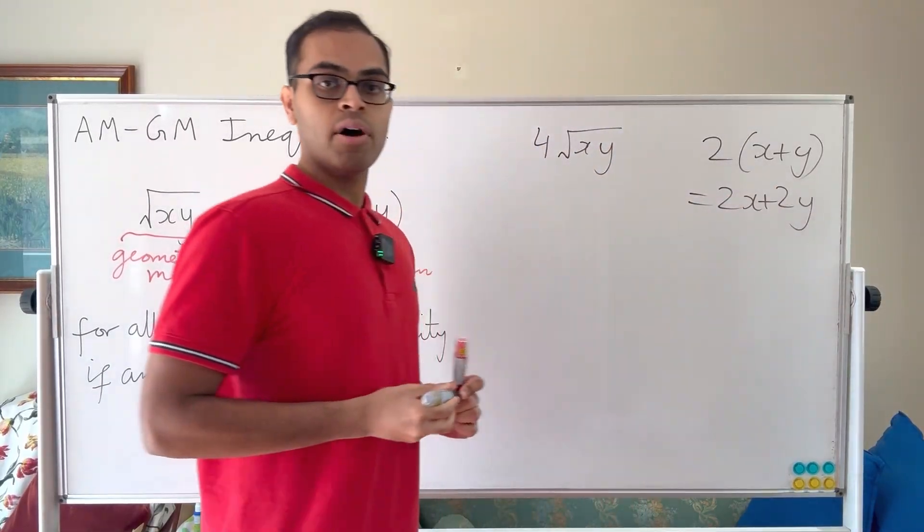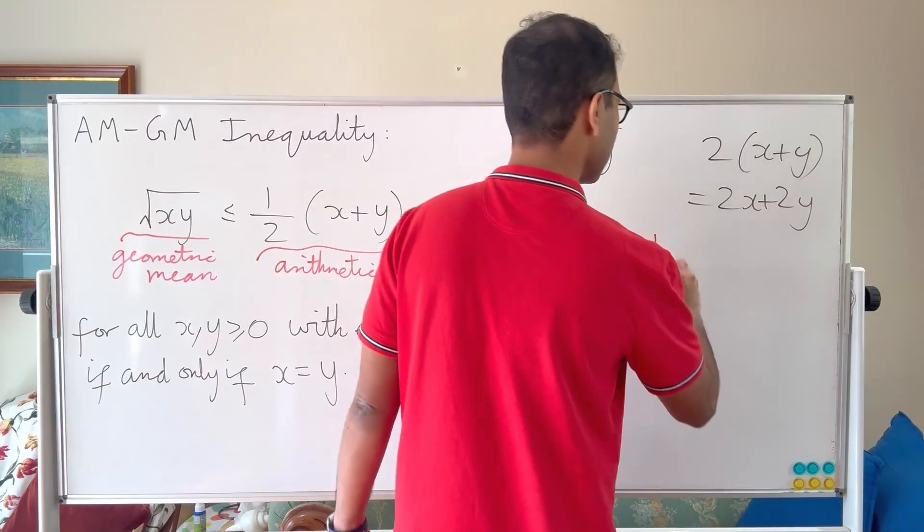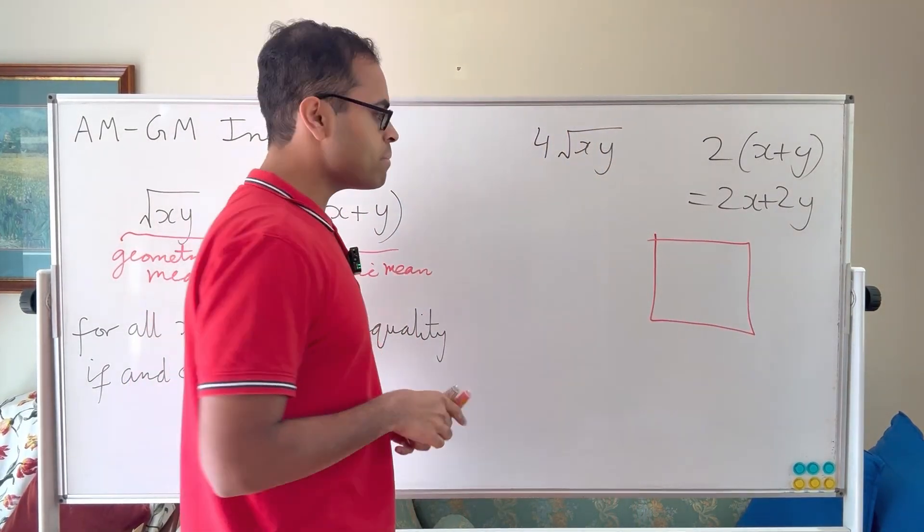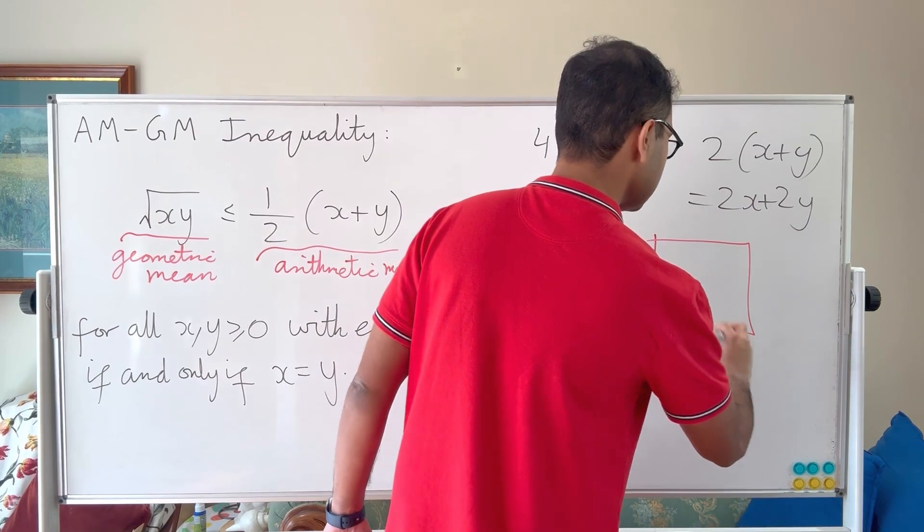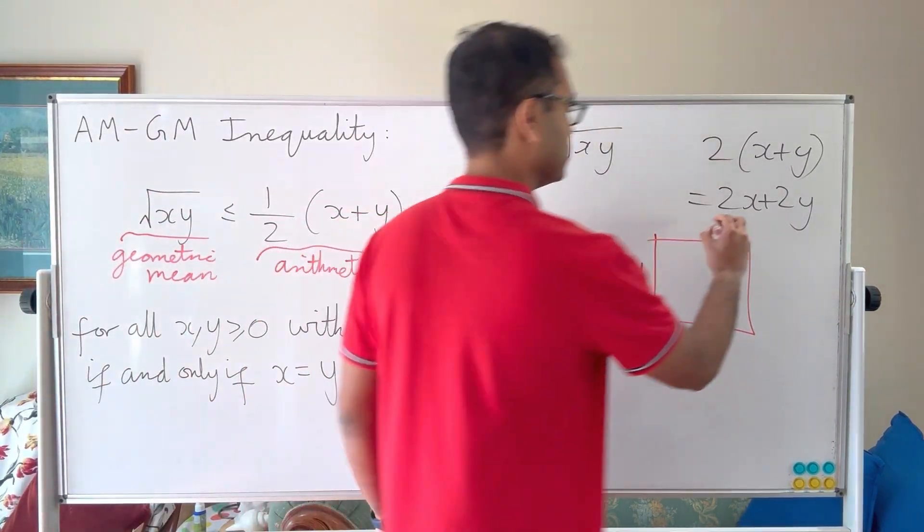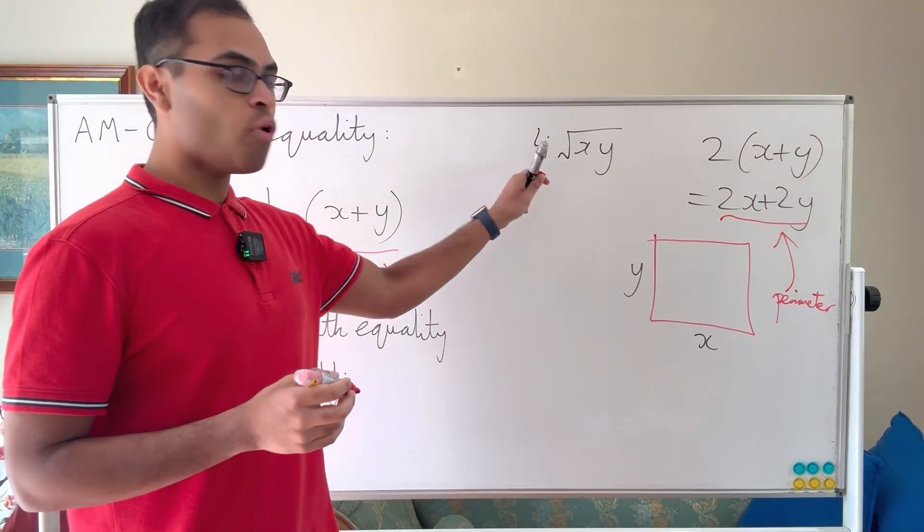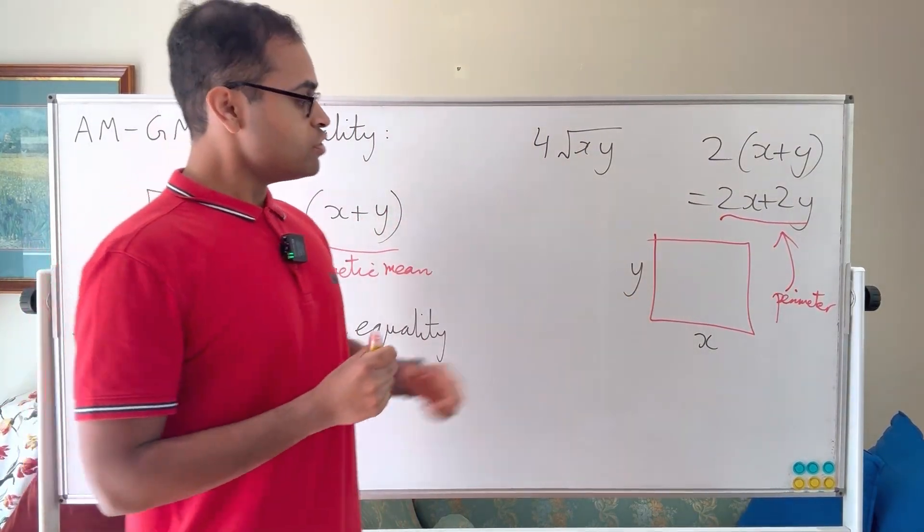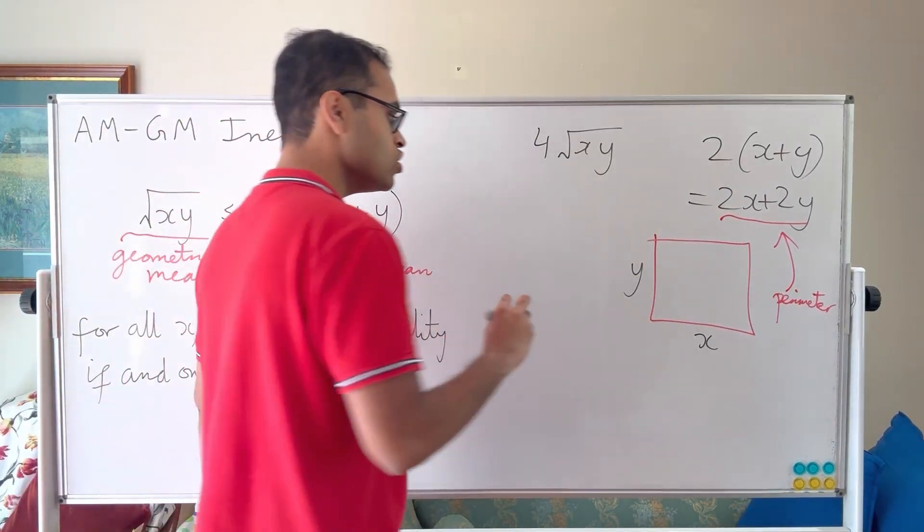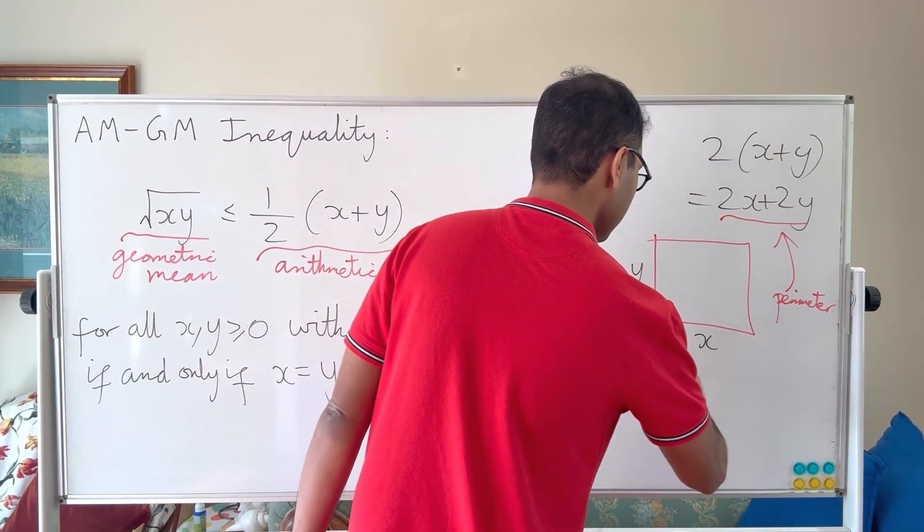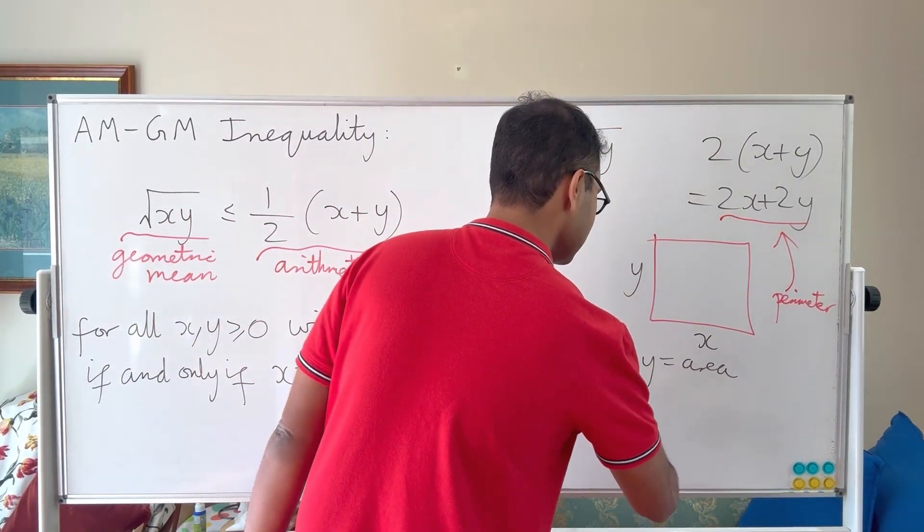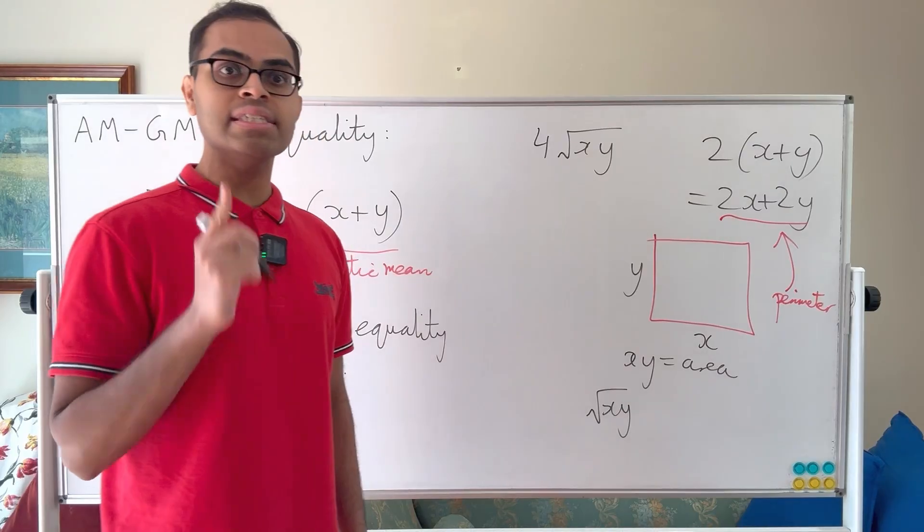The way to think about this is we take a rectangle with side lengths x and y. This looks a little bit like a square but it's a rectangle where the side lengths are x and y, and 2x plus 2y is the perimeter of the rectangle. On the other hand, xy is equal to the area, and if we take the square root of xy, that's equal to the side length of a square with the same area as the rectangle.